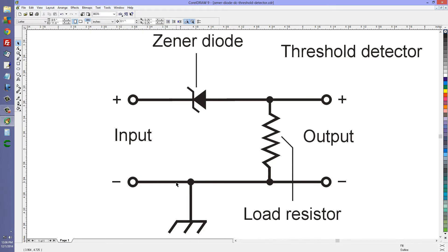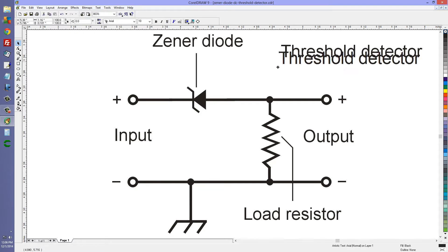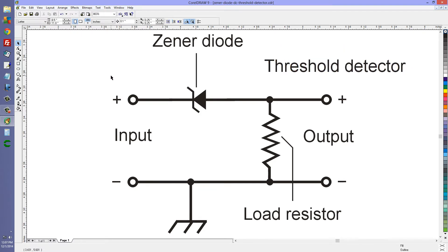So what we have here is what can commonly be called a DC voltage threshold detector. Electrons flow with the arrow in reverse bias situations, and in a Zener diode that would be from right to left along this positive line. Electrons enter the positive power supply terminal and leave the negative terminal, flowing through whatever load we have and back. That will only happen if the voltage at this input exceeds the Zener voltage.